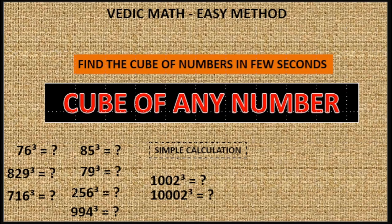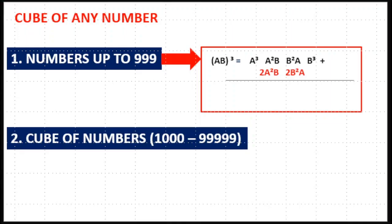Hello everyone, welcome to Premiere month. Today we are going to learn about an easy method in Vedic Math to find out the cube of any number within a few seconds. For numbers up to 999 we use a simple method for 2-digit and 3-digit numbers, but for 4-digit and 5-digit numbers there is a slight change — we need to add zeros in the final product.